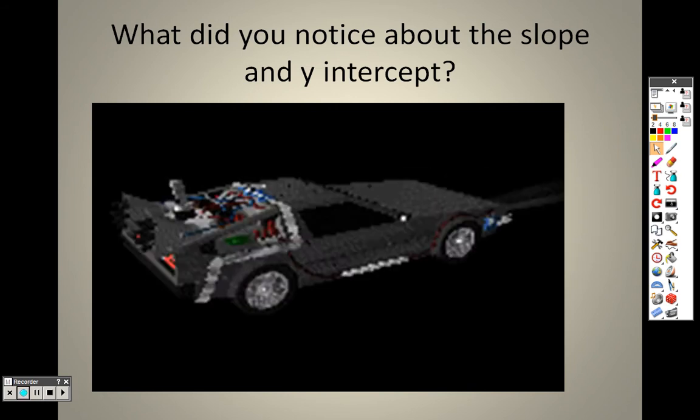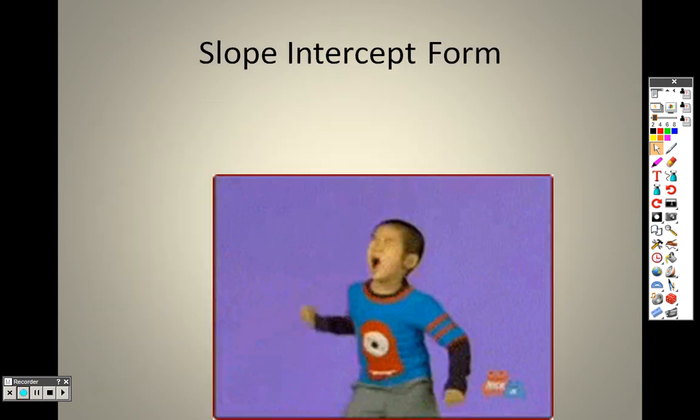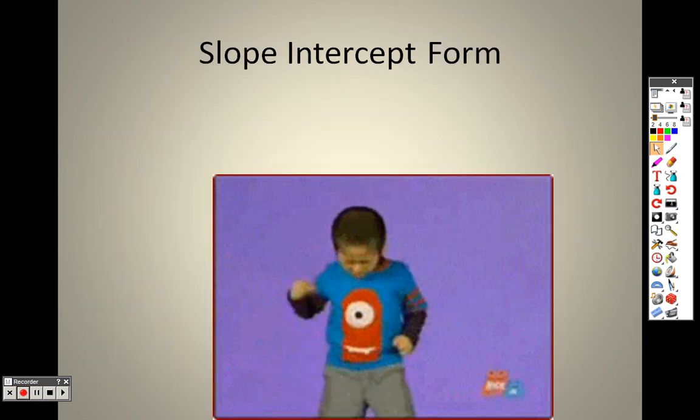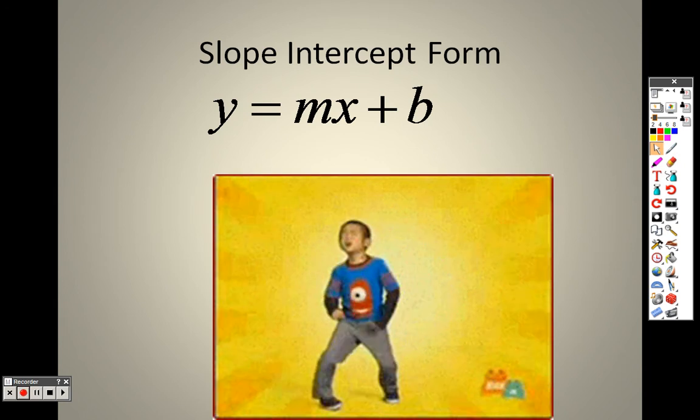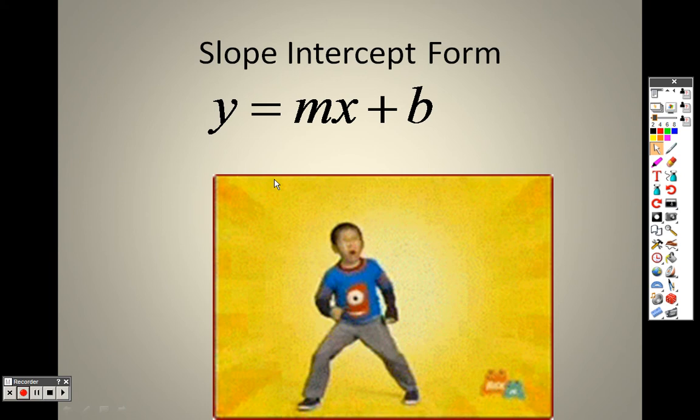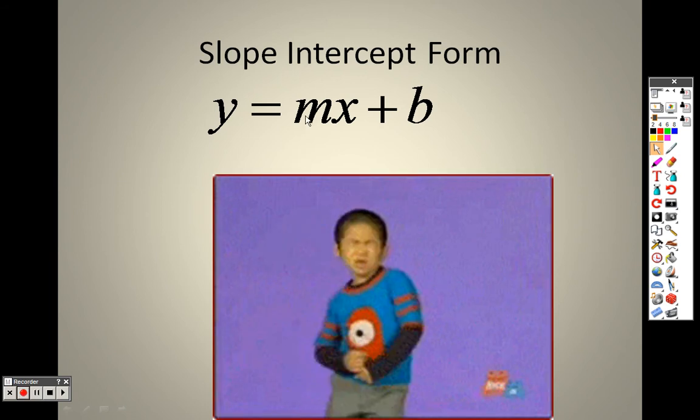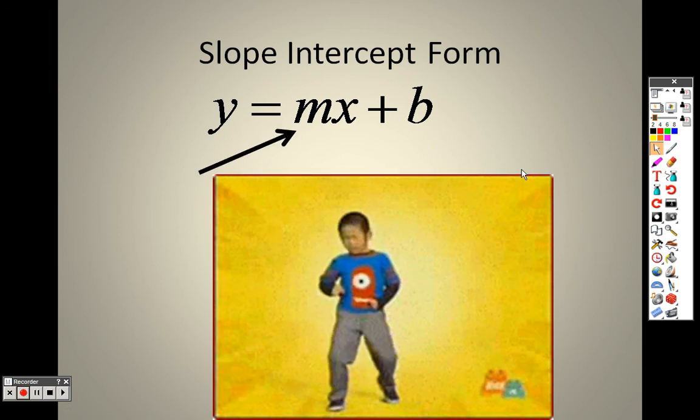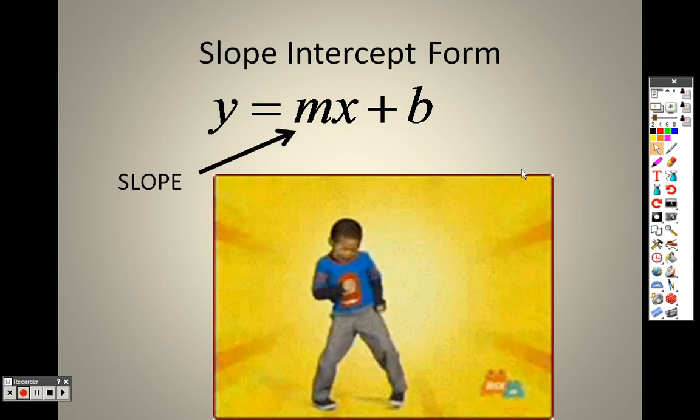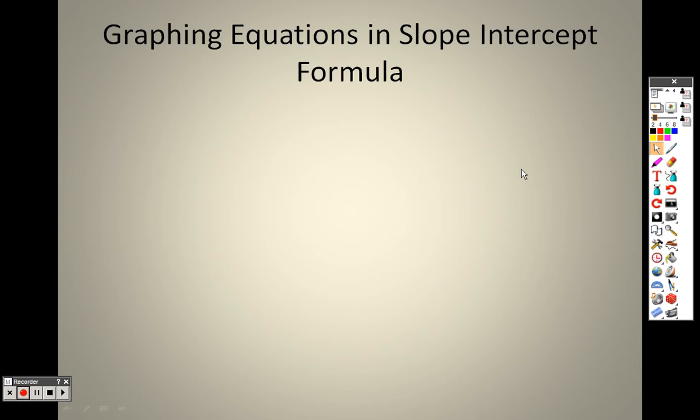So the question I have for you, what did you notice about the slope and the y-intercept? Well, you should have noticed, just like we talked about before, the slope-intercept form. And the number out in front of the x is the slope, and the number all by itself is the y-intercept. We've got the slope right there, and we have the y-intercept right there.